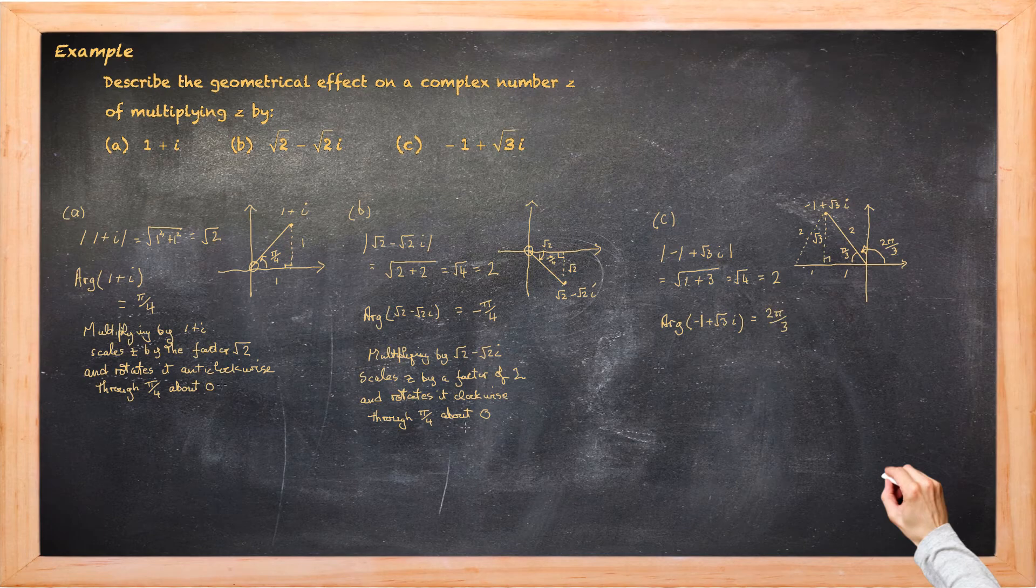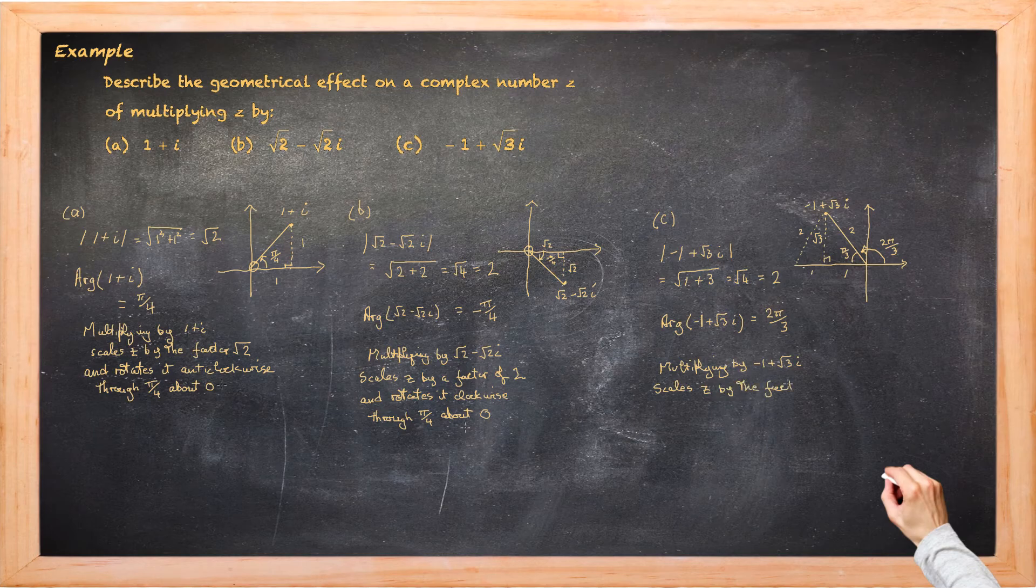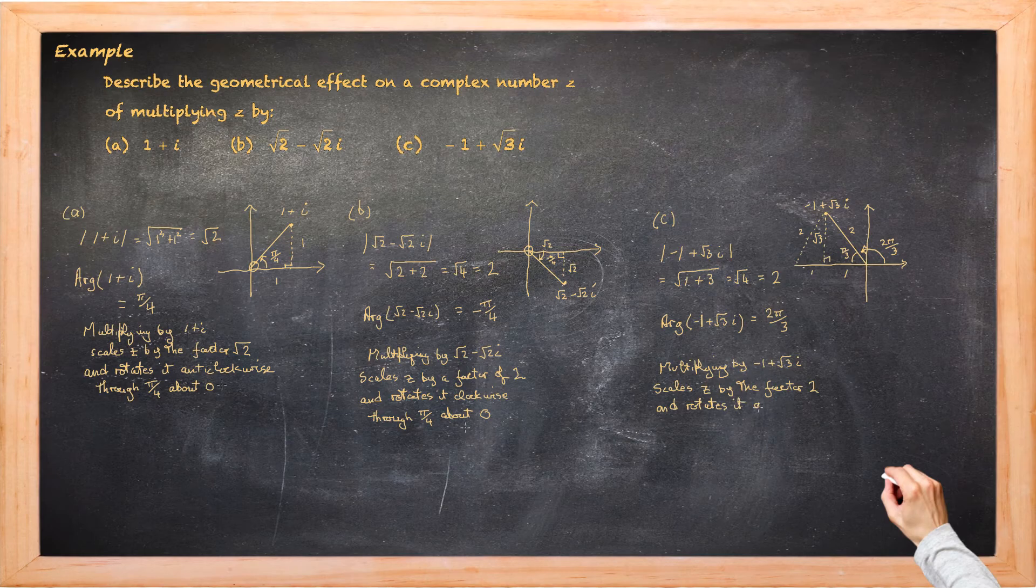So again what does this mean? Well it means that when we multiply by negative 1 plus root 3i that will scale z by the factor of 2 and rotate it anti-clockwise through 2 pi upon 3 about 0.